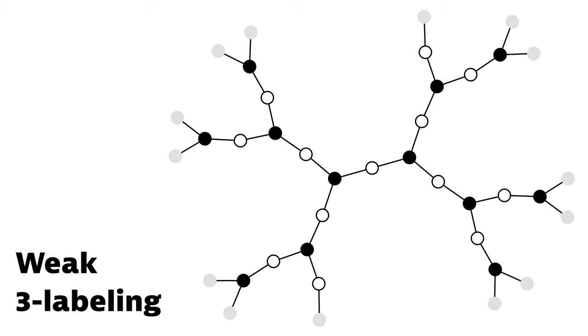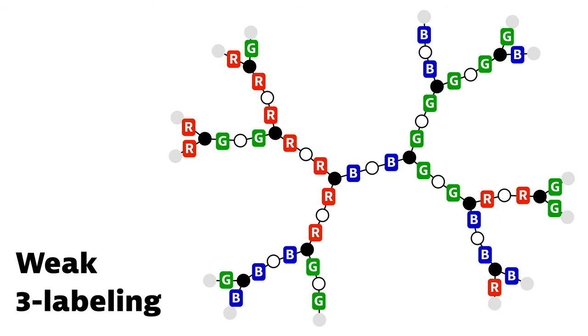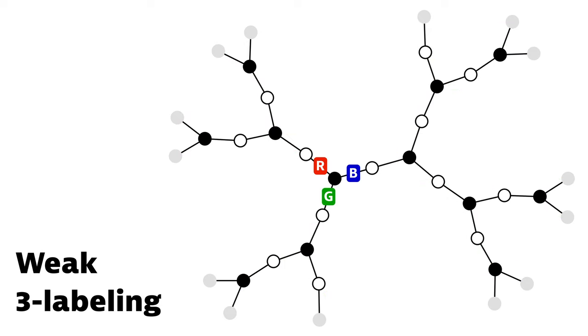And what is the task? Each active node has to label its incident edges with colors red, green, and blue. And there are two constraints. Active nodes must not be monochromatic. That is, all three edges around an active node can't have the same color. For example this is good, and so is this, but this one is forbidden.